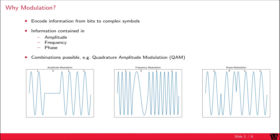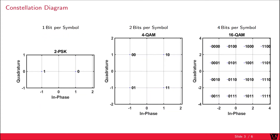Combinations of those are also possible. For example, QAM or Quadrature Amplitude Modulation is a combination of phase and amplitude modulation. The complex symbols can be shown in a so-called constellation diagram.